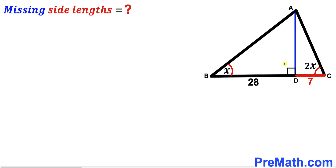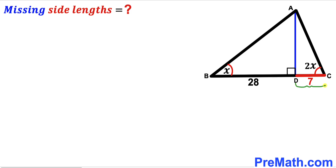Welcome to pre-math. In this video we have got triangle ABC along with perpendicular AD, such that segment BD is 28 units, segment CD is 7 units, angle ABD is X, and angle ACD is 2 times X. Our task is to calculate these missing side lengths: side AB, side AC, and the perpendicular length AD.